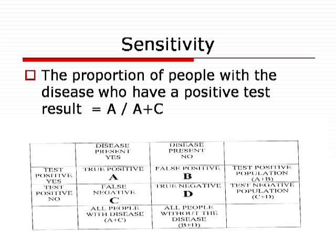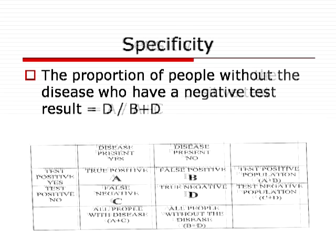And the specificity therefore? The specificity is the proportion of people without the disease who have a negative test result. So that's the true negatives divided by the false positives plus the true negatives — so that's D divided by B plus D.